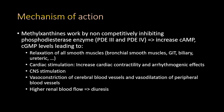The methylxanthines work by non-competitively inhibiting the phosphodiesterase enzyme — specifically phosphodiesterase 3 and 4. This leads to increased levels of cyclic AMP and cyclic GMP, producing multiple effects. Higher levels of cyclic AMP and cyclic GMP from this inhibition lead to relaxation of all smooth muscles, including the bronchial smooth muscles, resulting in bronchodilation, as well as relaxation of GIT, biliary, and ureteric smooth muscle.